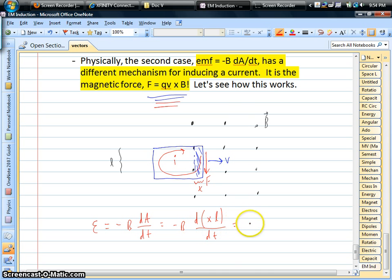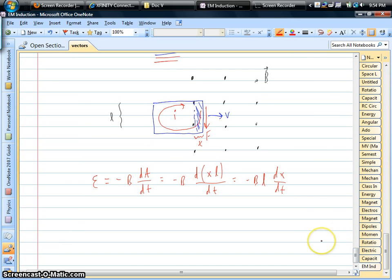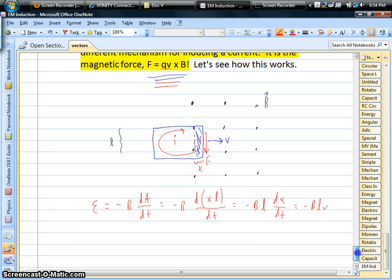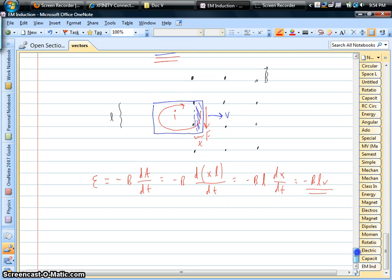Well, the L side, if you're just moving horizontally, stays constant. So we have the rate of change of the width. Well, the dX/dt, another name for that is velocity. So whenever you have the case of a changing area, this is always going to be your end result for the EMF: magnetic field times the length of one of the sides times how fast you're moving.